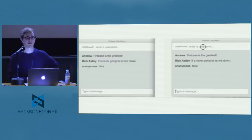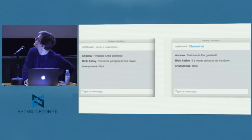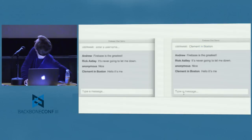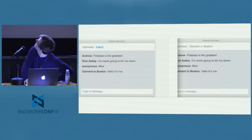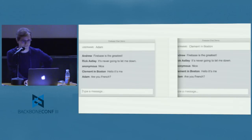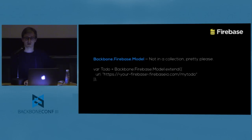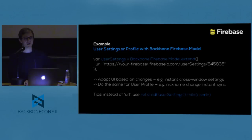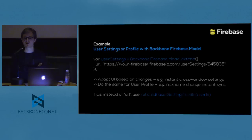Another quick example: creating a chat. It's a very basic use case — just a collection with a name and a message. You can also use a Backbone Firebase model for a real-time model — it's useful for other things. For instance, user settings or user profiles are very useful here. Using the Backbone real-time model for user settings means when the user changes a setting, you directly get it on all different windows open and on different devices.